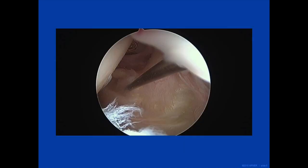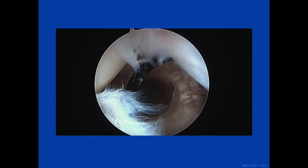Starting with the proximal and posterior portal, an 18-gauge spinal needle is inserted under direct visualization with the scope from the anterior lateral portal. An 11 blade knife was used to make stab incisions at these locations, penetrating the capsule, and a snap was inserted and used to spread the soft tissue. Then, a twisting cannula is inserted to maintain access of the joint.